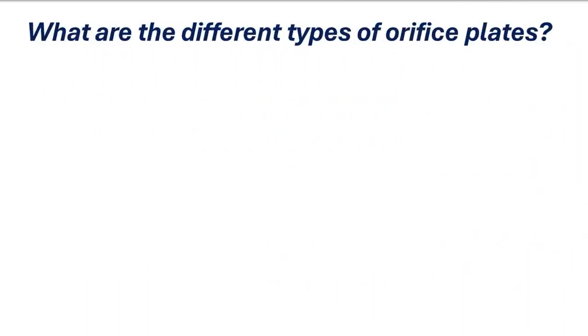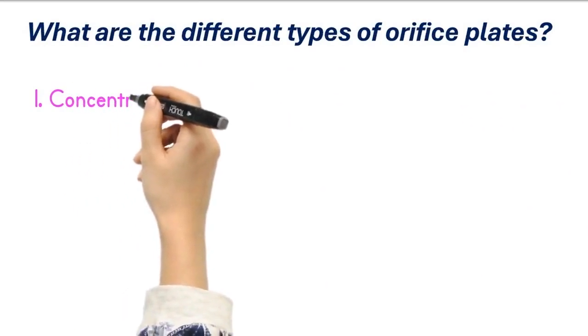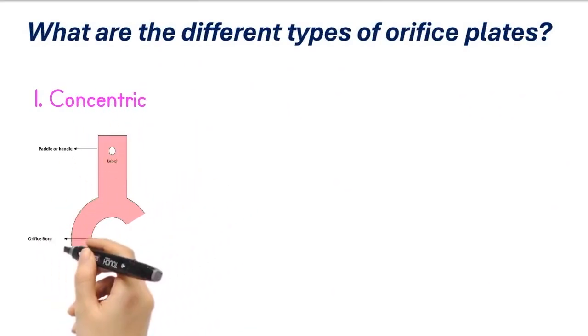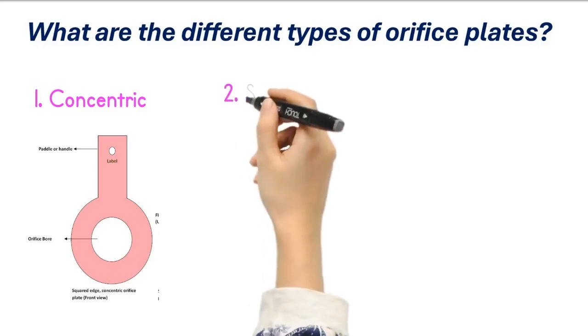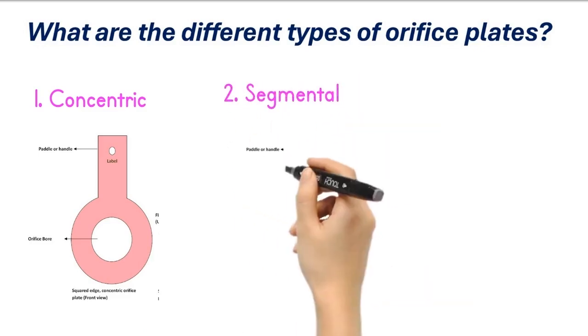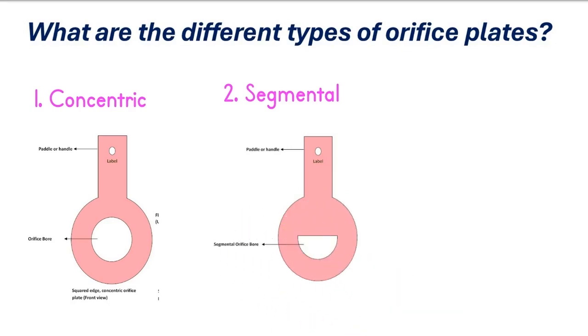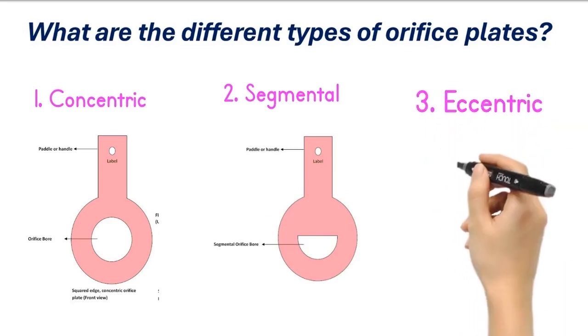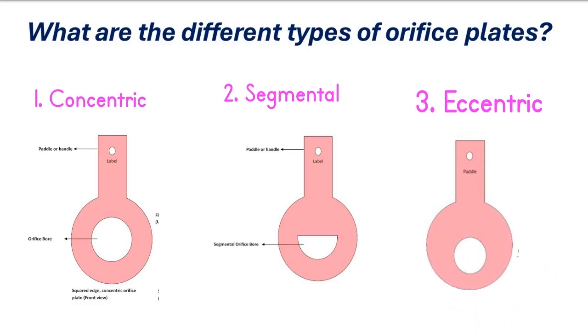What are the different types of orifice plates? There are three types of orifice plates. Number one: concentric. These plates are used for ideal liquid as well as gases and steam services. Concentric holes are present in these plates. Number two: segmental. These plates have a hole in the form of a segment of the circle. This plate is used for colloidal and slurry flow measurement. Number three: eccentric. This plate has eccentric holes. This plate is used in viscous and slurry flow measurement.